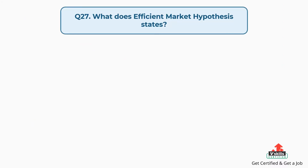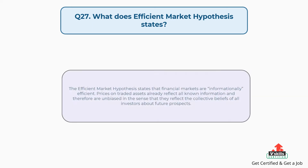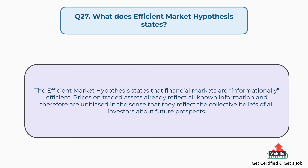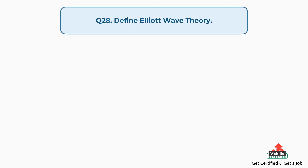Question number 27: What does the efficient market hypothesis state? The efficient market hypothesis states that financial markets are informationally efficient — prices on traded assets already reflect all known information and therefore are unbiased in the sense that they reflect the collective beliefs of all investors about future prospects.